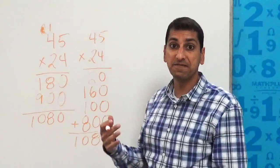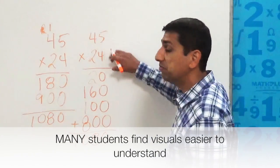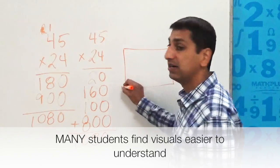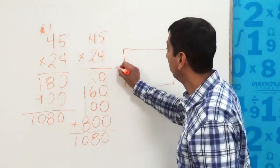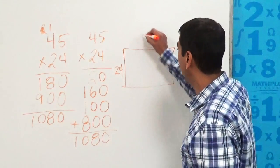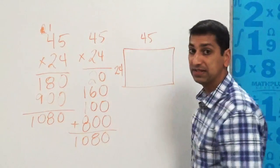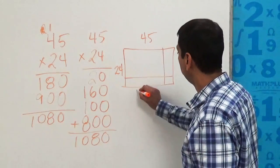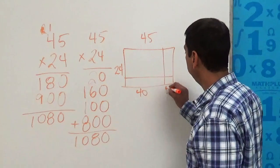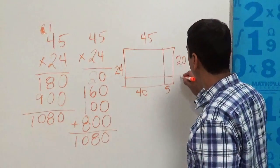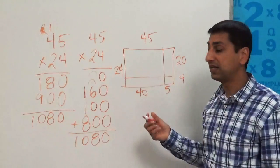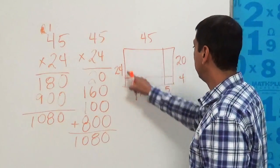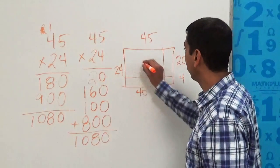And then we might even give them a visual picture of what's going on. When you multiply two numbers, you can think of that as the area of a rectangle. And this rectangle would be 24 units on this side and 45 units on that side. And if I break it up like this, and I imagine this to be 40 and 5, and this side to be 20 and 4, then I can compute the area of these four little internal rectangles.